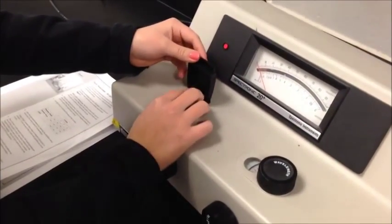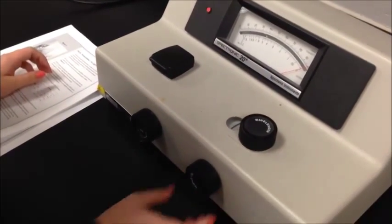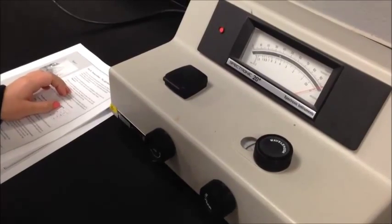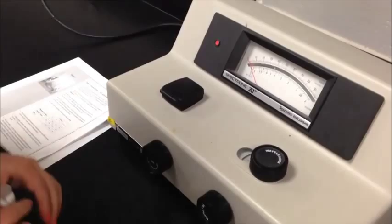So we're putting cuvette 1 into the spectrophotometer to set the zero for the other cuvettes that we're going to be testing. Before we put in the others, we always have to put this one in to be a zero.